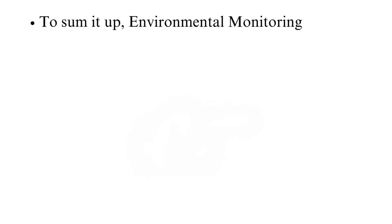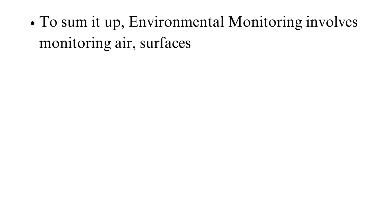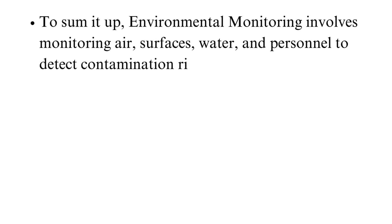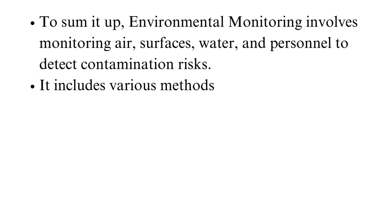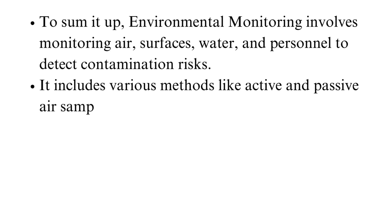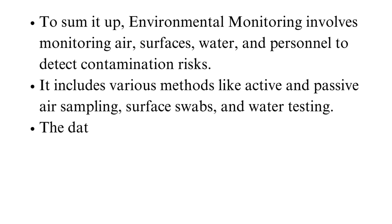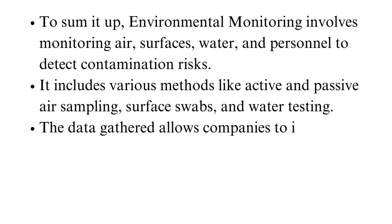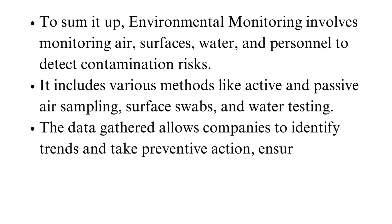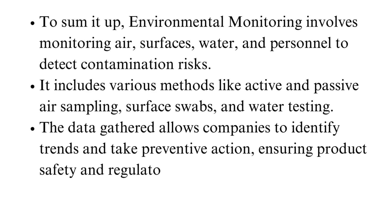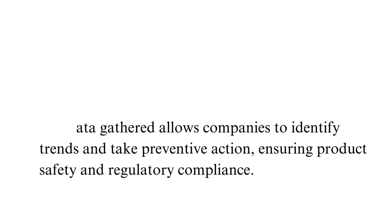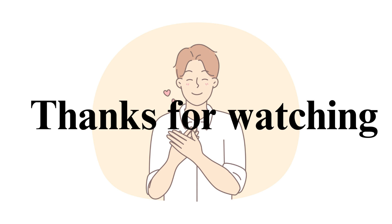To sum it up, environmental monitoring involves monitoring air, surfaces, water, and personnel to detect contamination risks. It includes various methods like active and passive air sampling, surface swabs, and water testing. The data gathered allows companies to identify trends and take preventive action, ensuring product safety and regulatory compliance. If you found this video helpful, please give it a thumbs up and subscribe to the channel. Thanks for watching, and see you next time.